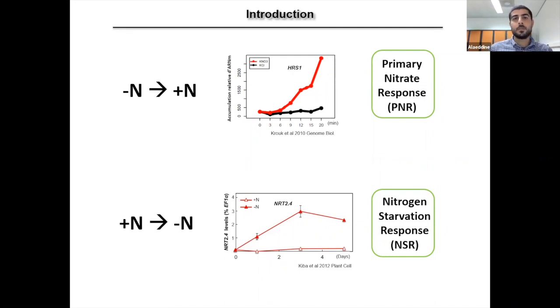In this simplified model, plants have two different main pathways. The first one is known as primary nitrate response and happens when nitrate is supplied to nitrogen starved plants. It's characterized by the rapid, within minutes, and high induction of primary nitrate response markers such as NIA1 and other genes involved in nitrogen assimilation.